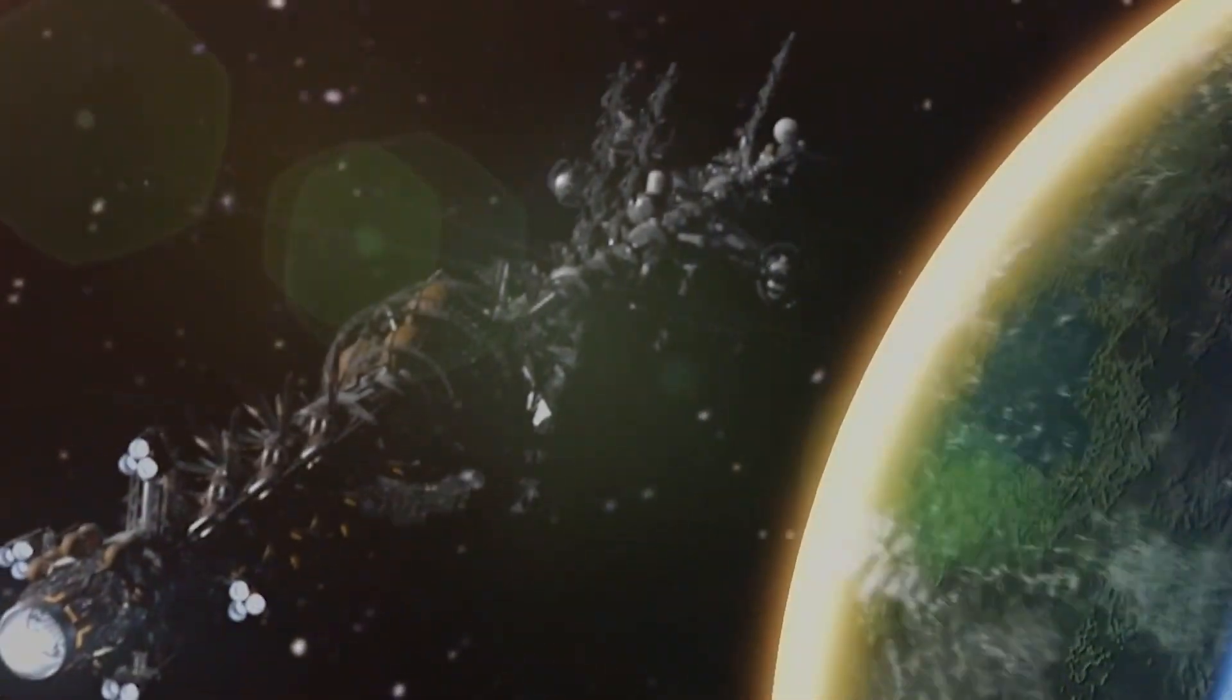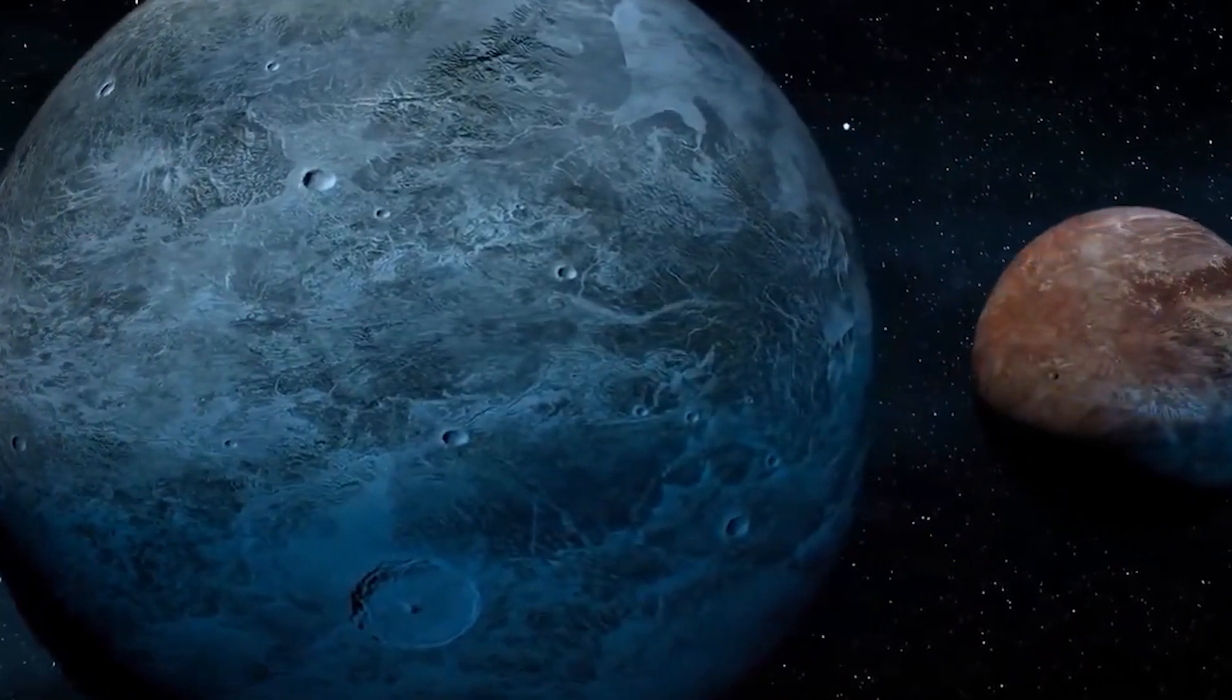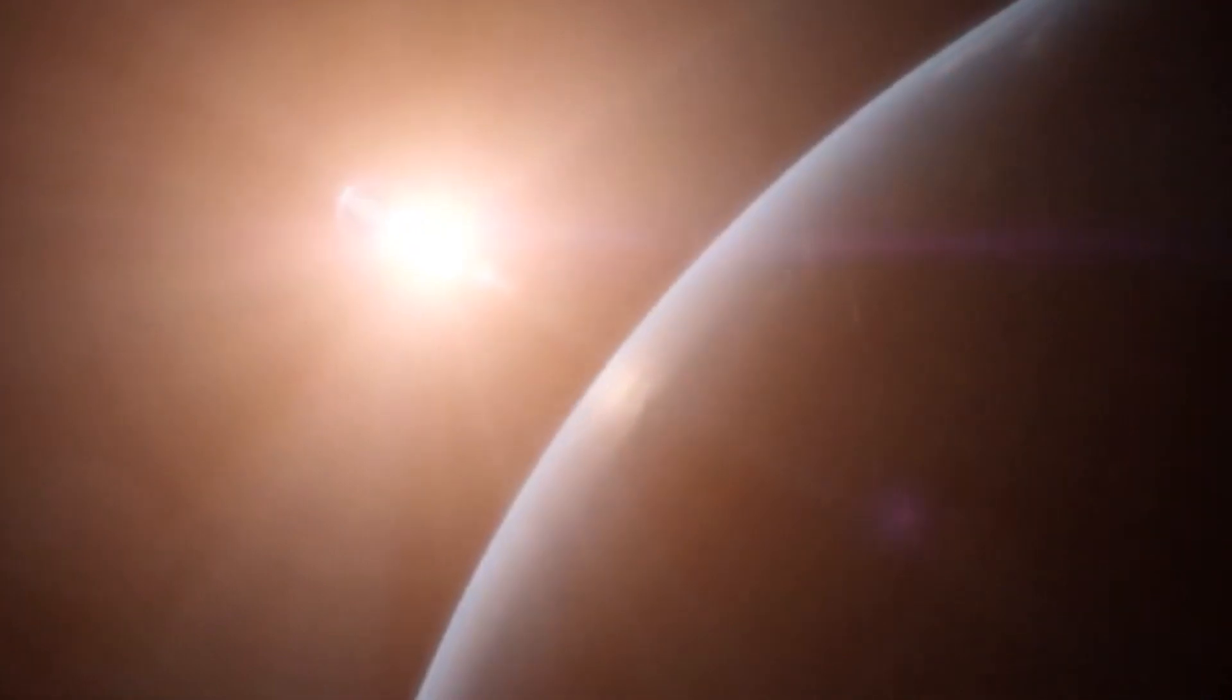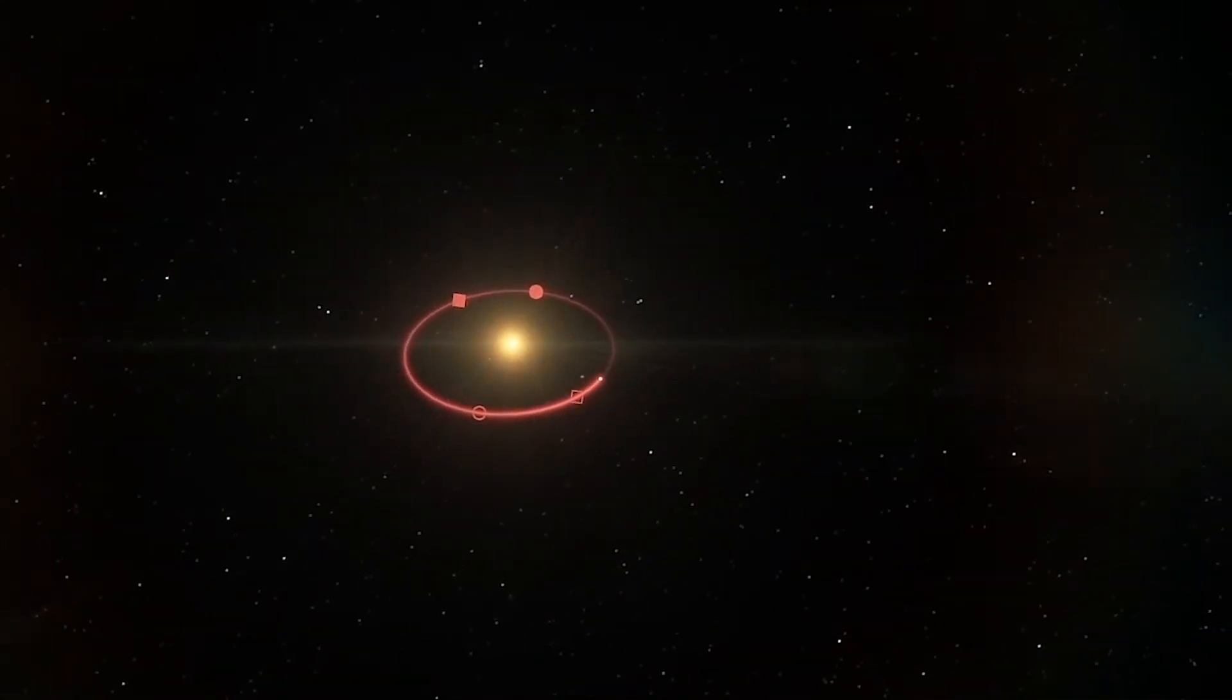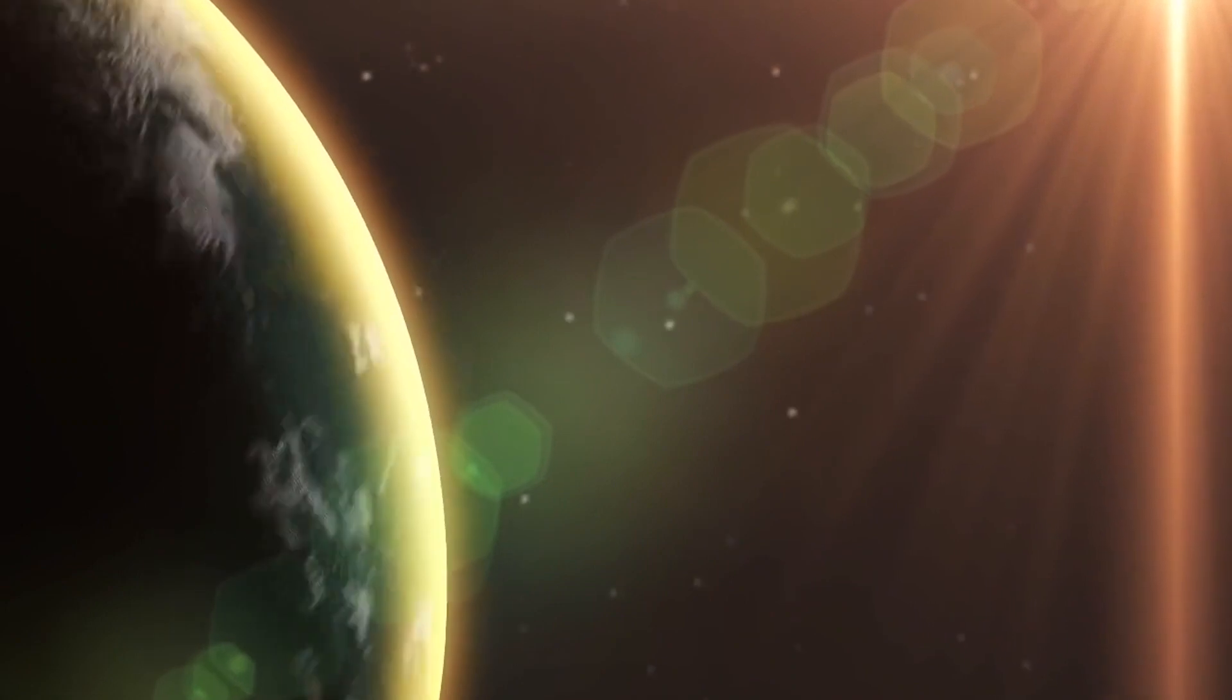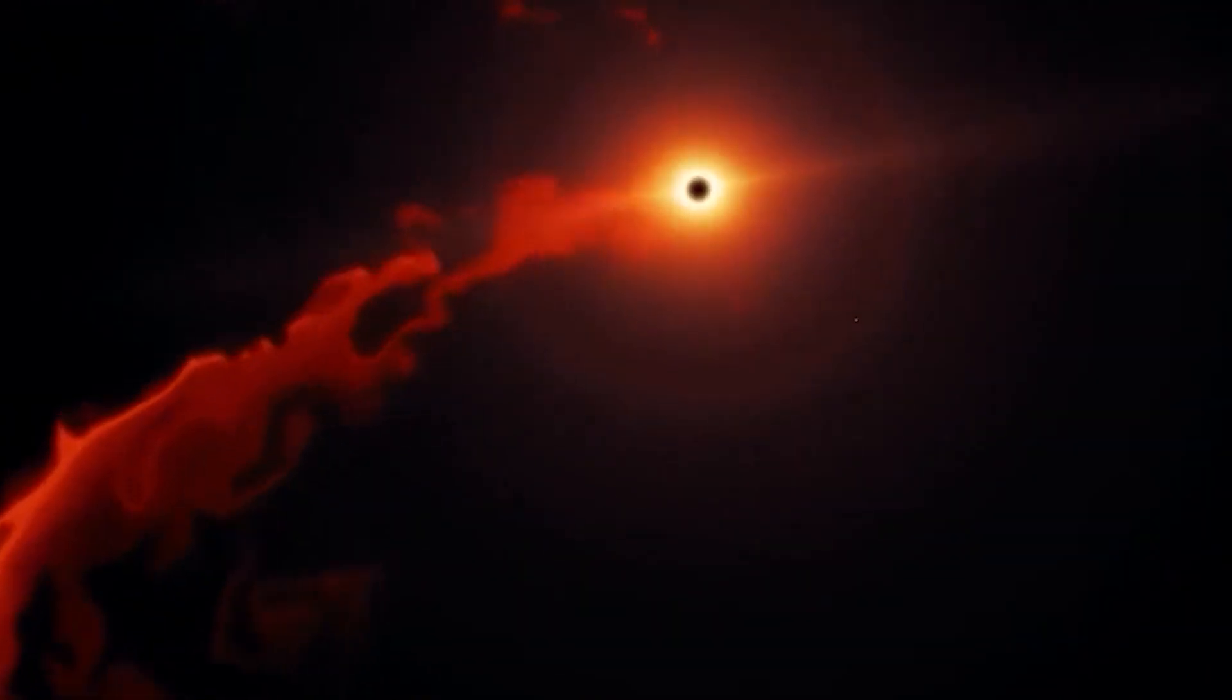Three years after the discovery of Proxima b, scientists announced the discovery of Proxima c, a candidate for a second planet in the system which is at least six times as big as Earth. Since Proxima c takes 5.2 years to complete one circle around the star, it is most likely too frigid to support life as we know it on its surface. So according to experts, Proxima b is still our best bet.